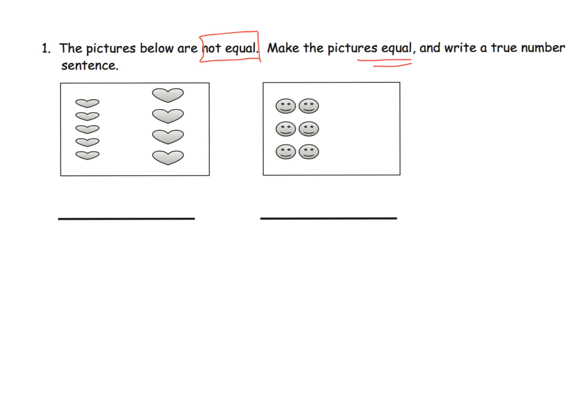Boy, man, students have a lot of choice on how they can make them equal. Well, probably the most common. I can see that there's five hearts and four hearts. So that's nine hearts. So I can see that we've got a five plus four over here.